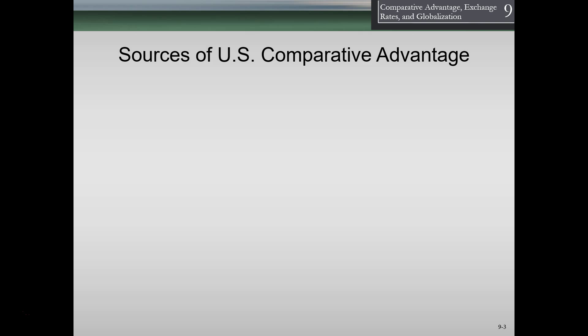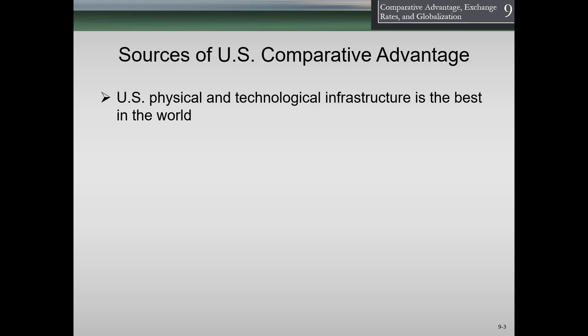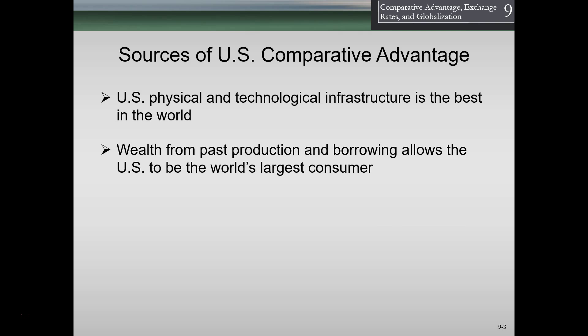Sources of U.S. comparative advantage: U.S. physical and technological infrastructure is among the best in the world. When we think about the ability to produce things — trade, communication, technology — these are things that are really good in the U.S. compared to most of the rest of the world, giving U.S. firms a pretty big advantage. It could change in the long run, but it would take some time for infrastructure like that to change.